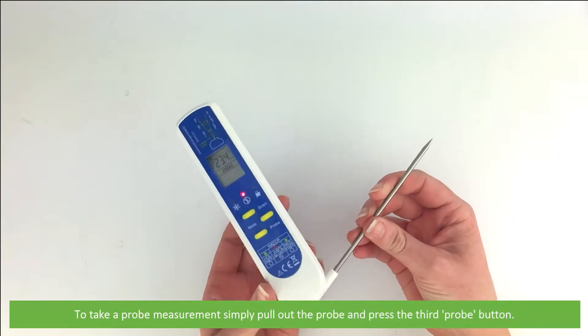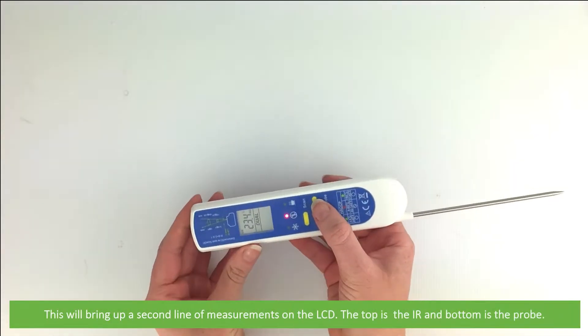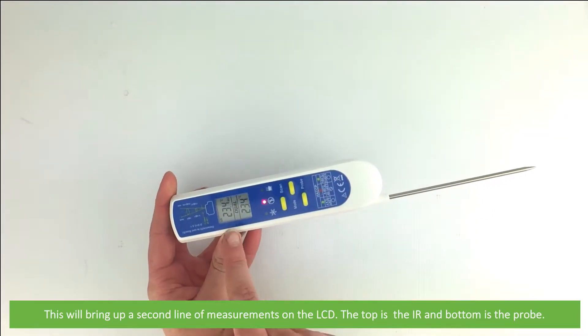To take a probe measurement, simply pull out the probe and press the third probe button. This will bring up a second line of measurement on the LCD screen. The top is the infrared and the bottom is the probe measurement.